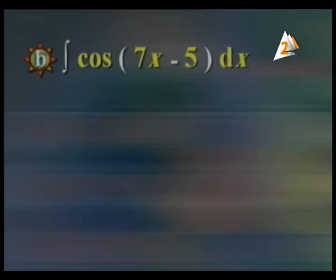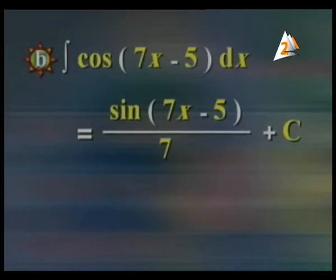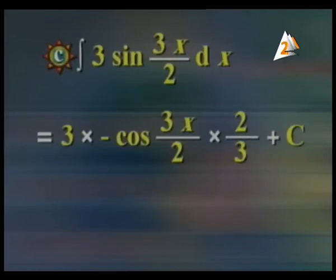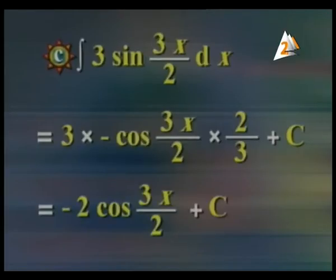Number (b): integration of cosine(7x minus 5) dx. The integration of cosine gives sine. So this equals sine(7x minus 5) divided by the coefficient of x, which is 7, plus c. The final answer is 1/7 times sine(7x minus 5) plus c. Number (c): integration of 3 sin(3x/2) dx equals negative 2 cosine(3x/2) plus c.